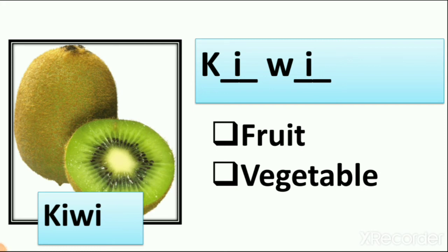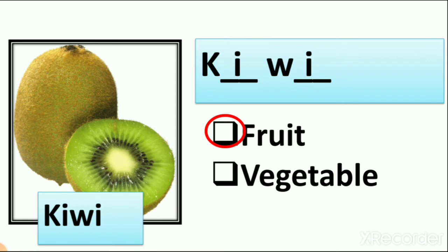Kiwi is a fruit or vegetable? We eat kiwi as a fruit because we eat it raw — we cannot cook kiwi when we eat. So we circle the fruit. Kiwi is a very costly fruit because in our country we do not farm kiwi, so we buy it from other countries.